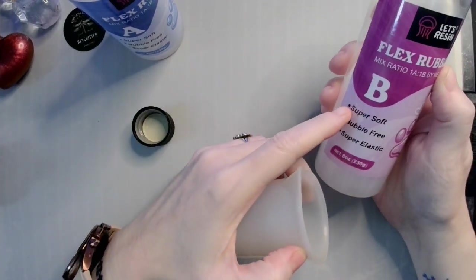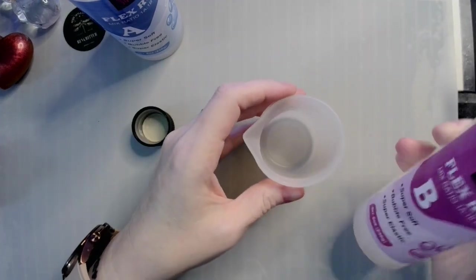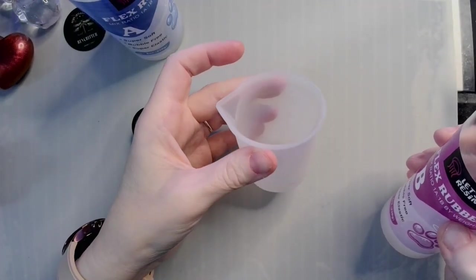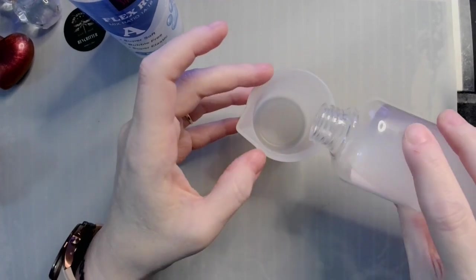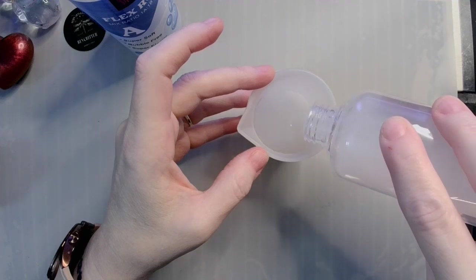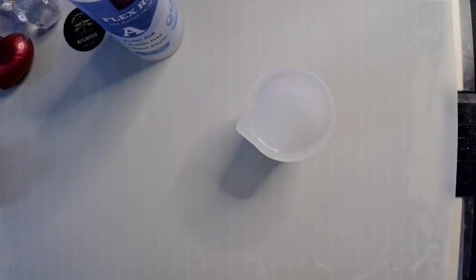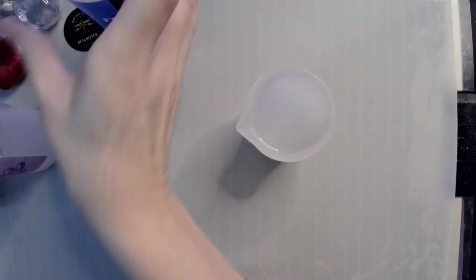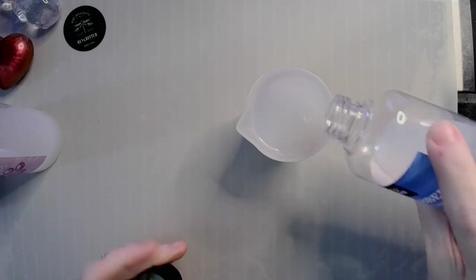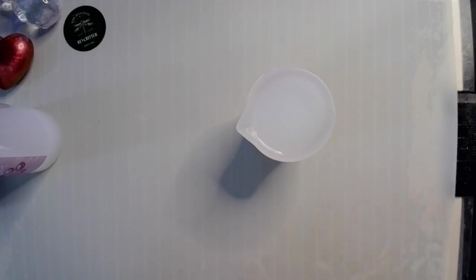So it's one to one, super soft, bubble free, super elastic. Both of the bottles weigh the same, so I'm pouring 50 mil and 50 mil. That was B and this is A, so we will have a total of 100.